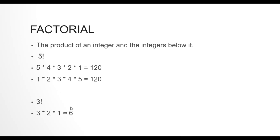The program would loop and multiply from the given number down to 1, or from 1 up to the given number — either way works. We start with 1, multiply by 2, get a result, then multiply that result by 3, then by 4, and so on. It's a simple loop where we multiply the running product with the next integer each iteration.